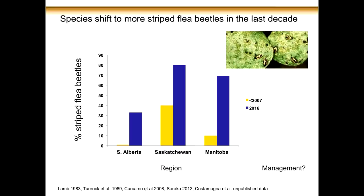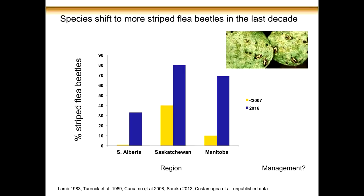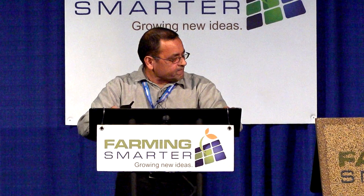I mentioned earlier that there are different species compositions depending on the ecoregion, and we have seen a clear shift. This data shows the percentage of striped flea beetles. In southern Alberta — the yellow bar is data before 2007 — around Lethbridge, we did a study about 15 years ago, and if you took 1,000 flea beetles, only one would have been the striped flea beetle. However, after 2016, sometimes 15, 20, 30% of flea beetles are actually striped. In Saskatchewan it's even worse — about 80% of populations are striped flea beetles. And in Manitoba it's not any better. So the striped flea beetle is becoming more dominant.